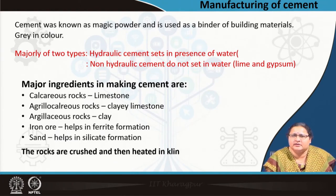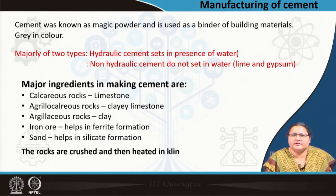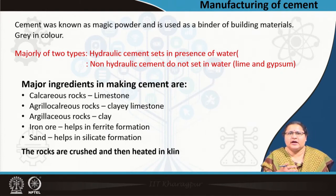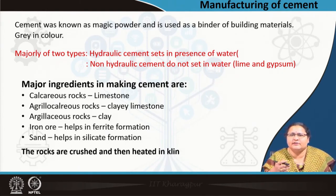Unlike sand and coarse aggregate which were naturally occurring, cement is manmade. The raw materials are a list of stones: calcareous rocks with limestone rich in calcium, argillo-calcareous rocks which are clayey sand limestone, argillaceous rocks containing alumina and clay, iron ore which helps in formation of ferrites, and sand which helps in formation of calcium silicates present in the rocks.